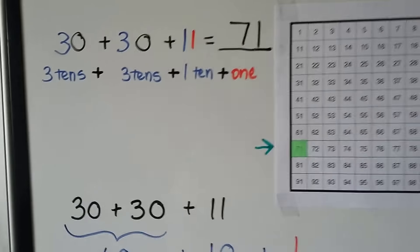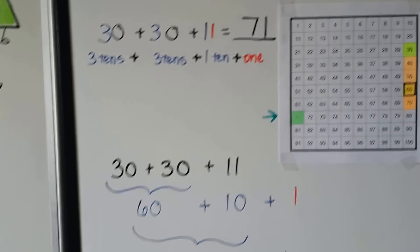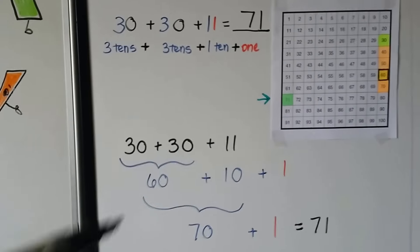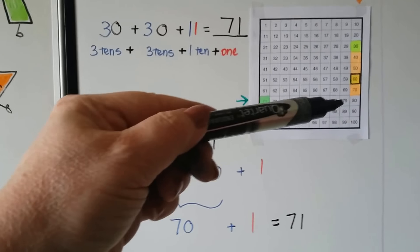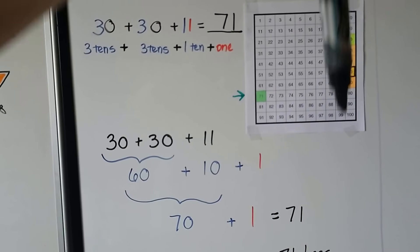So you can use a 100 chart to help you add ones and tens. Just remember when you add the ones, you go across the row, and when you add the tens, you go down the column.